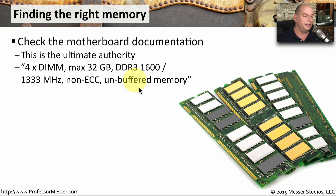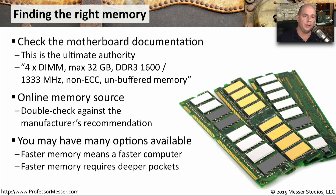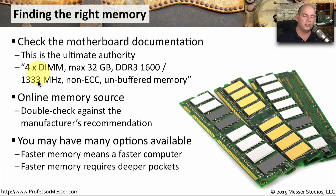Fortunately, many sites where you can purchase memory online also have online guides. You can enter the make and model of your computer and get a number of compatible options, then cross-reference those against your motherboard documentation. For example, a motherboard may support both DDR3 1600 and DDR3 1333 memory at different speeds. The 1600 memory is faster but more expensive. If you only need simple web browsing, you might save money with the slower memory while still getting the upgrade and capacity you're looking for.